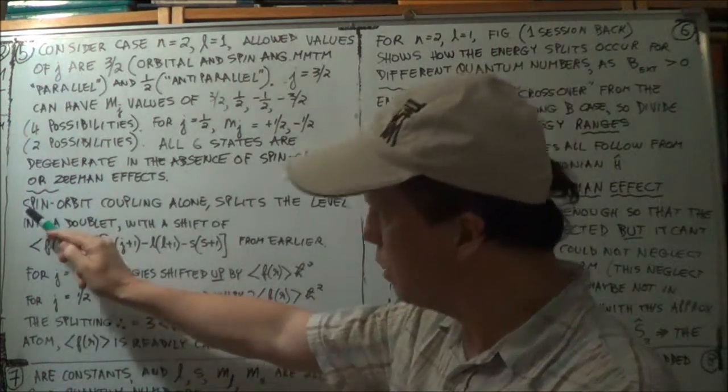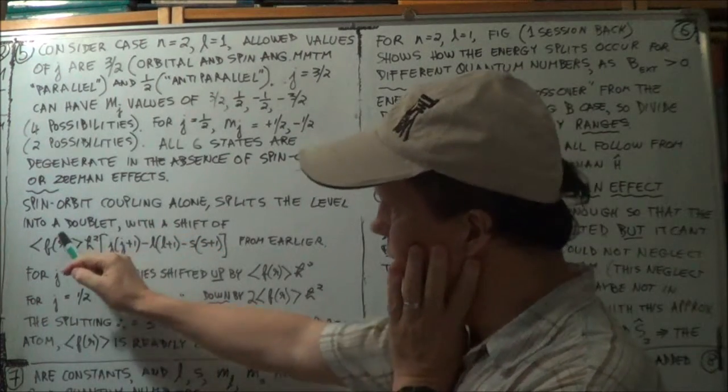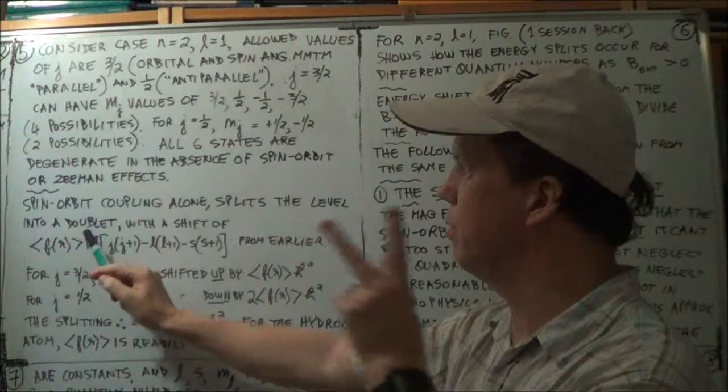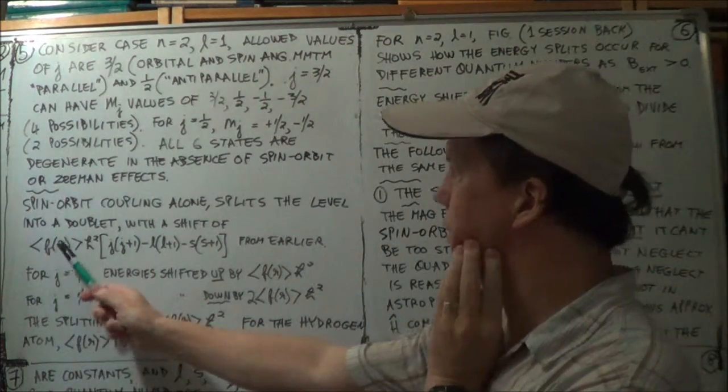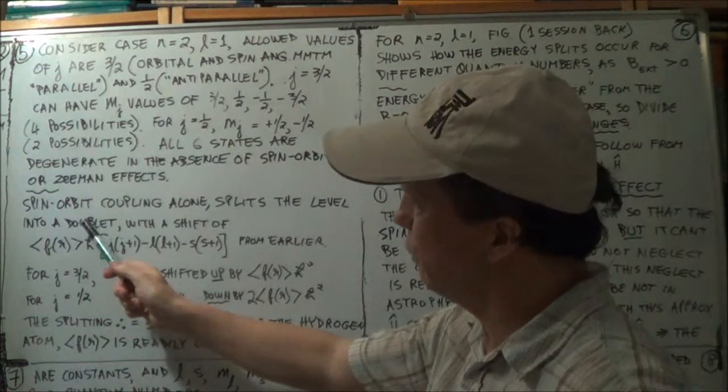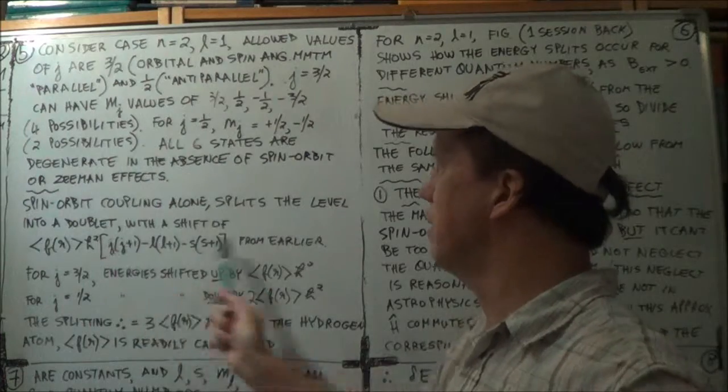Then, the energy level, due to the spin orbit coupling, there's a bit of revision here, it splits into a doublet, just two, two different frequencies. And the energy difference between these two energy levels is this amount. And we've done that in an earlier session.